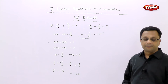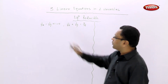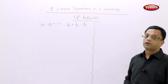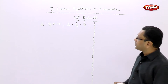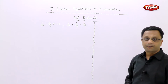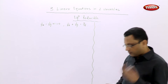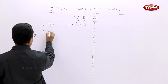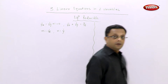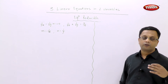Let us see another example. The equations are: 1 upon 3x minus 1 upon 4y plus 1 equal to 0, and 1 upon 5x plus 1 upon 2y equal to 4 upon 15. Again we have to convert these equations into linear equations in two variables. We will let 1 upon x be m and 1 upon y be n. When you substitute this, you will get two new simpler equations which we can solve to find the values of m and n.